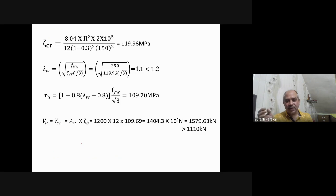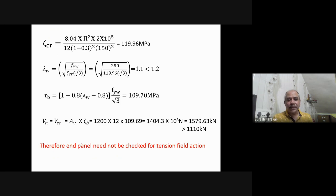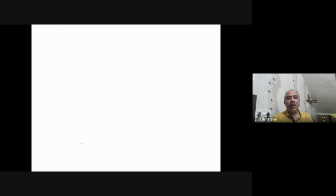V_cr = A_v · τ_b = 1579.63 kN, which is greater than the reaction of 1110 kN. Therefore, the end panel need not be checked for tension field action, as V_n > reaction.